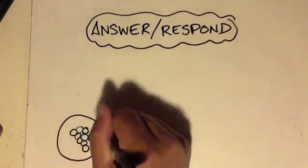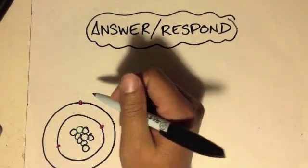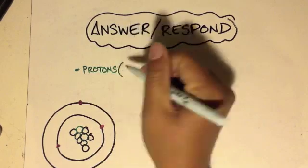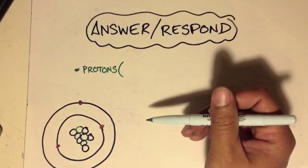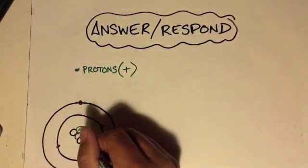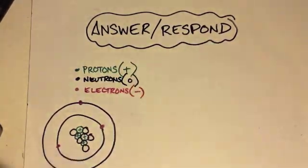So let's get started by reviewing a little bit. What I'm going to draw here is an atom. Now, you all know what an atom is. It consists of quite a few different things: protons, neutrons, and electrons. Now, protons are what type of charge? Actually answer this time. Good. Protons are positive. Then we have neutrons, which are neutral, and then electrons, which are negative.